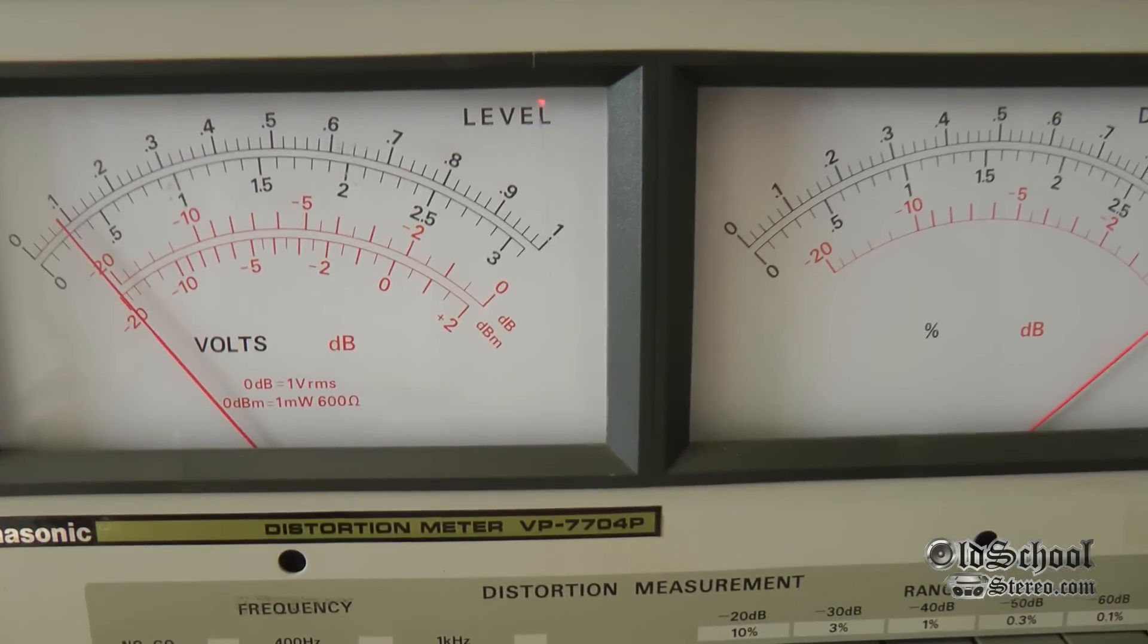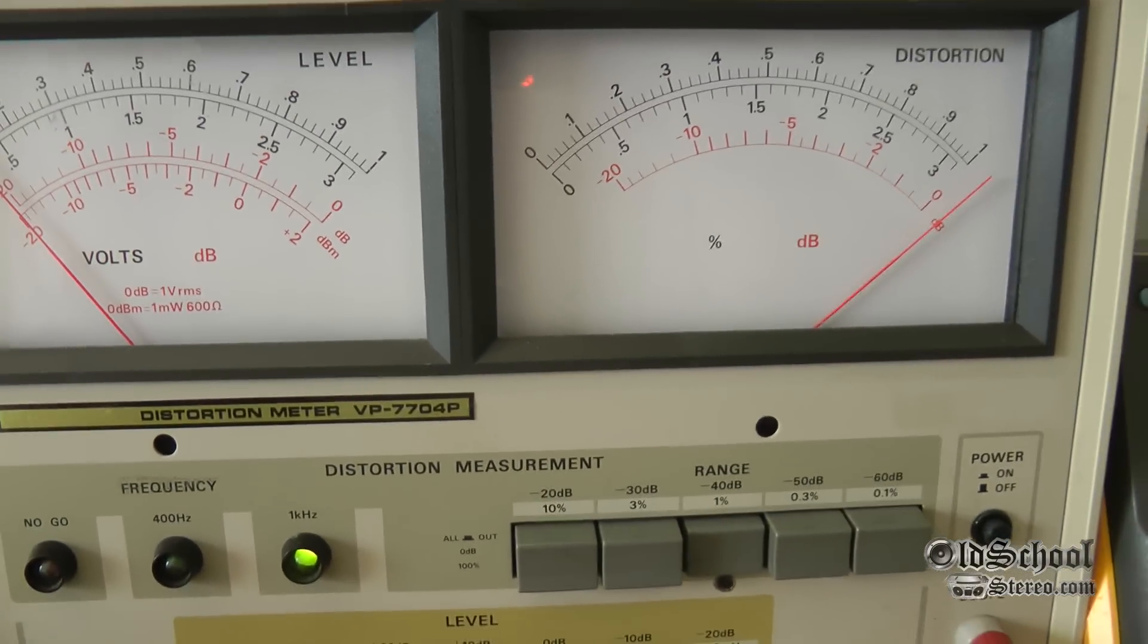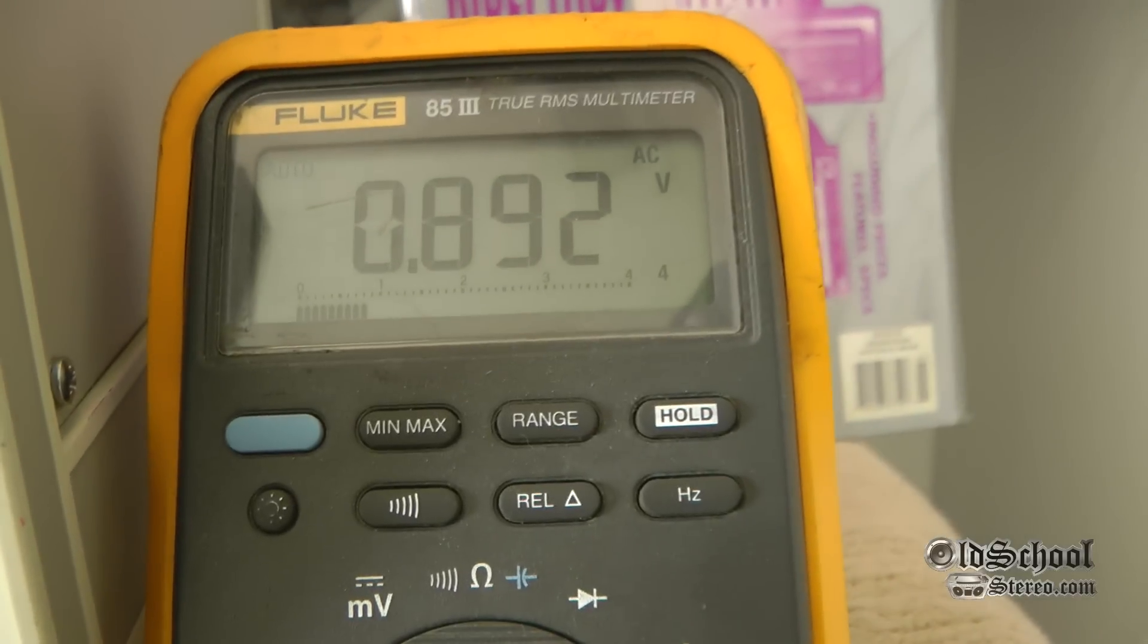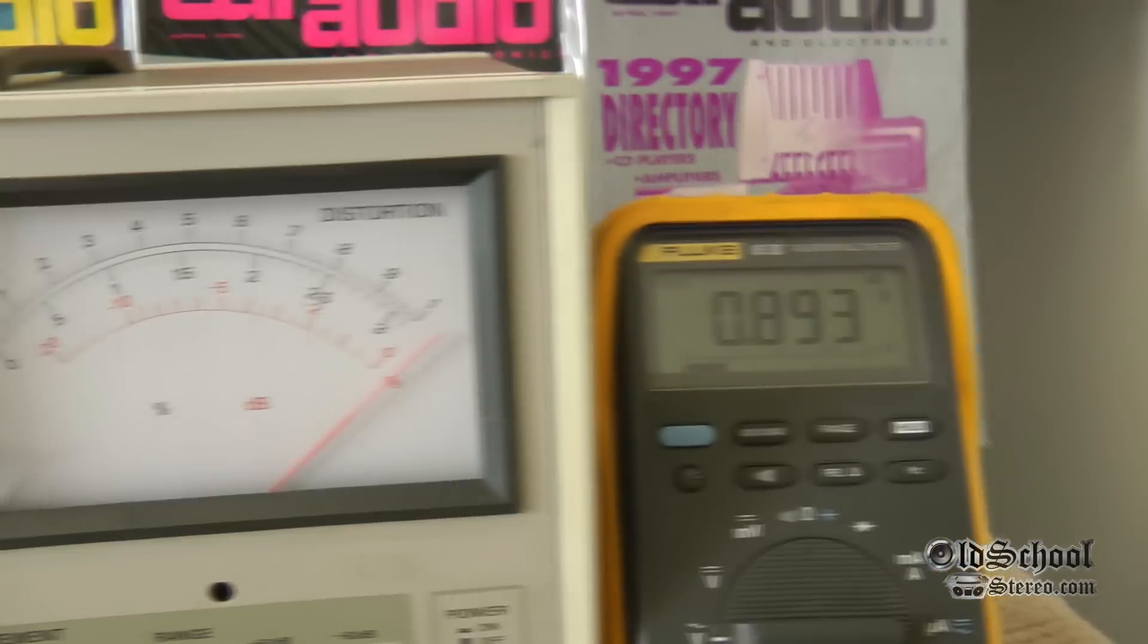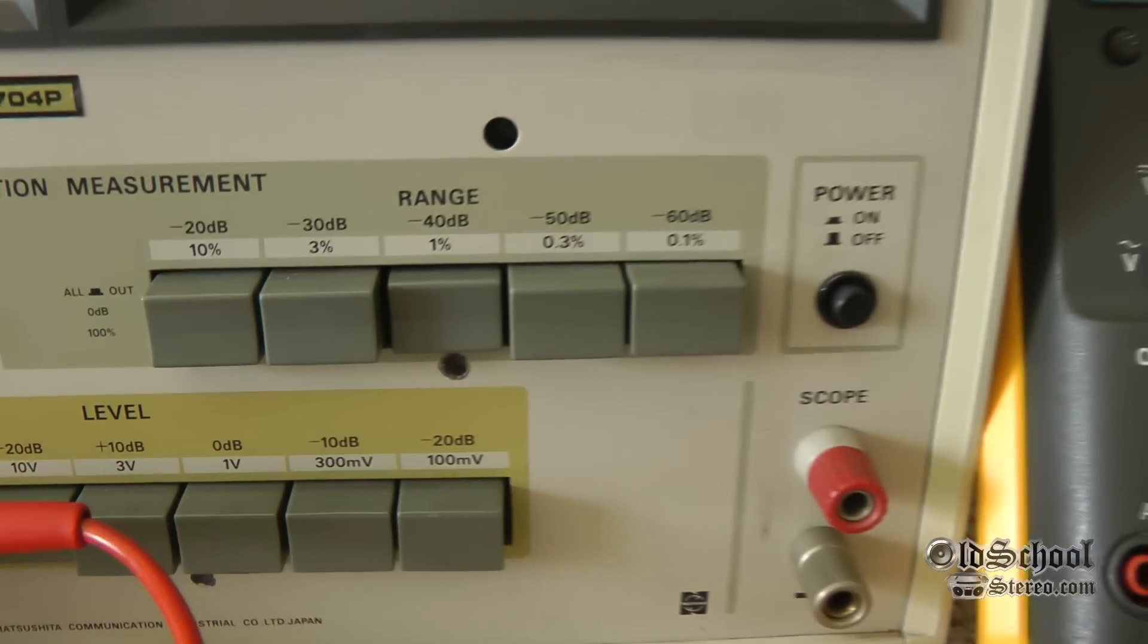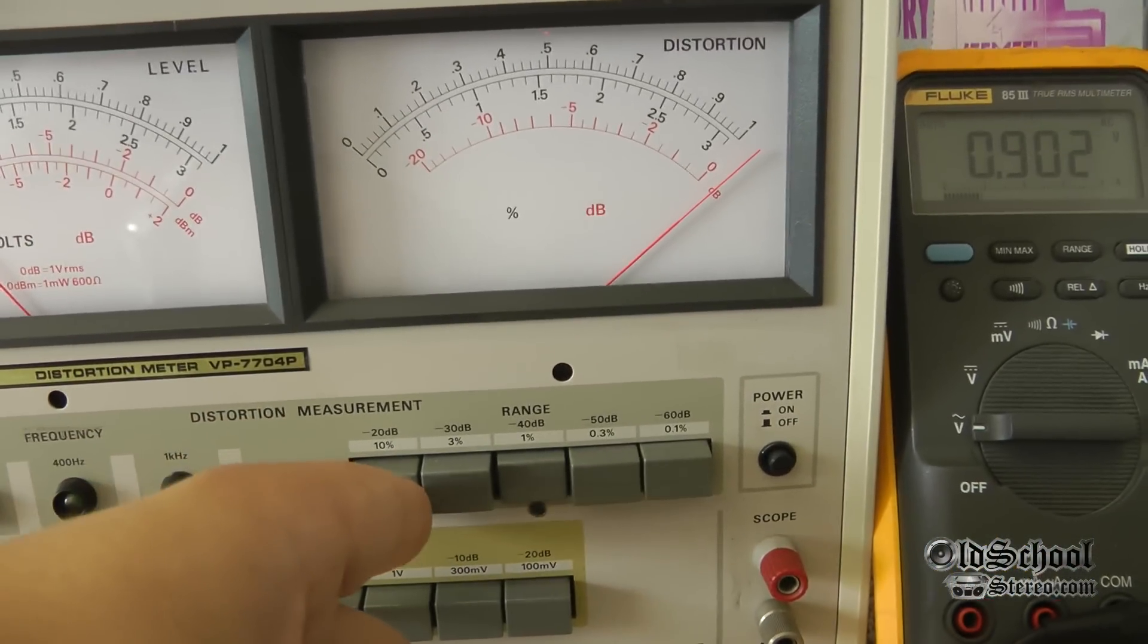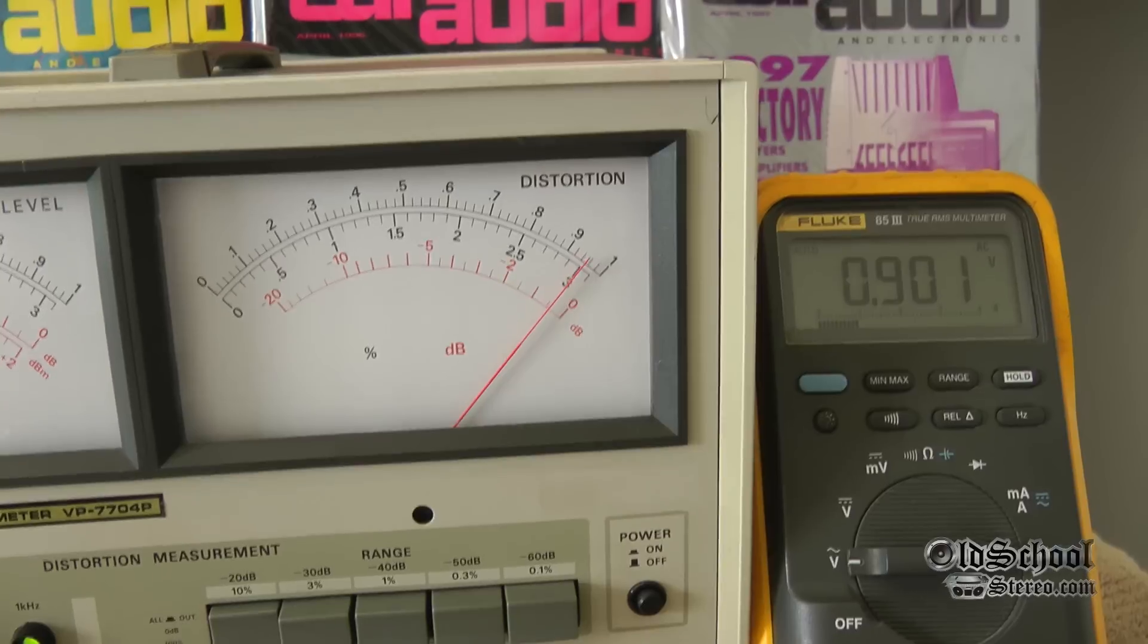I have the range set to ten going all the way across, so that's a little bit less than one volt. And we'll verify that here. Yeah, about 0.9 volts. Into distortion, it's set to one percent, and it's off the chart with one percent. So let's check and see if that's actually more than ten percent.